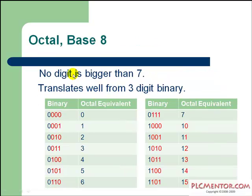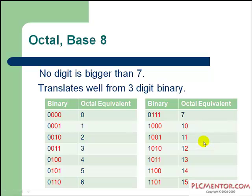Now let's go to octal. You may or may not have heard of octal, but it's an important number when we're talking about computer systems. It's actually base 8. No digit is bigger than a 7. So when you count up and get to 7, the next number you carry over and you have 10. So: 1, 2, 3, 4, 5, 6, 7, then 10, 11, 12, 13, and so on. When you get to 17, the next number is going to be 20. There's no 8 in octal.